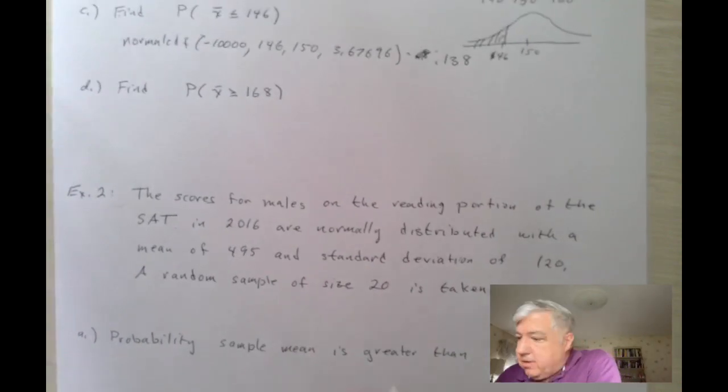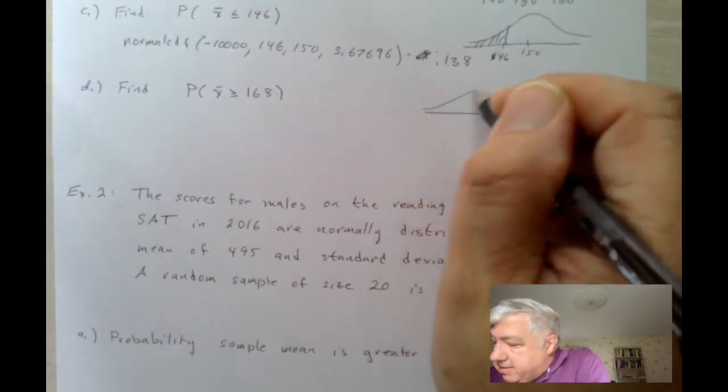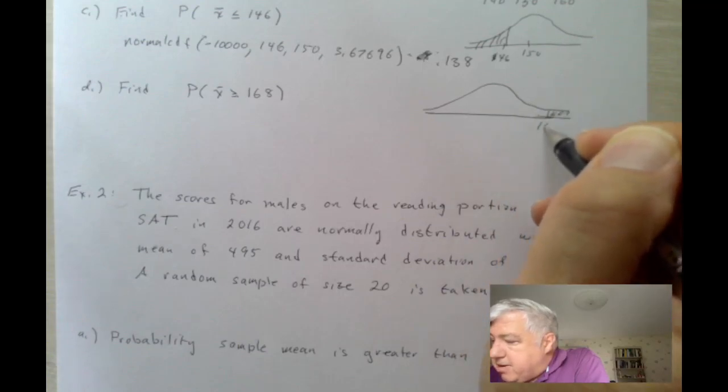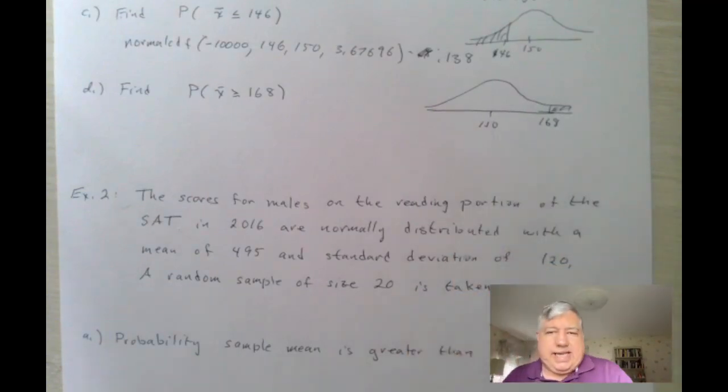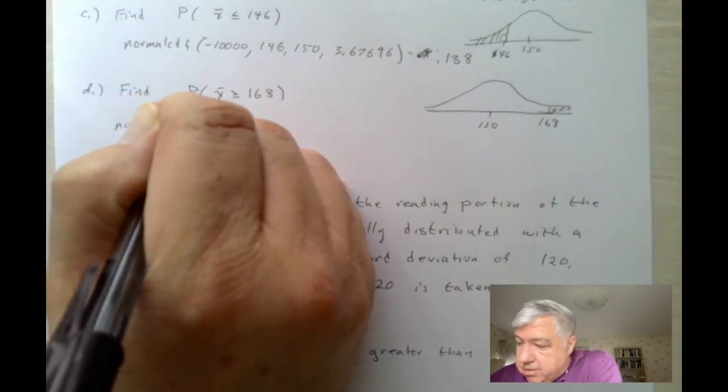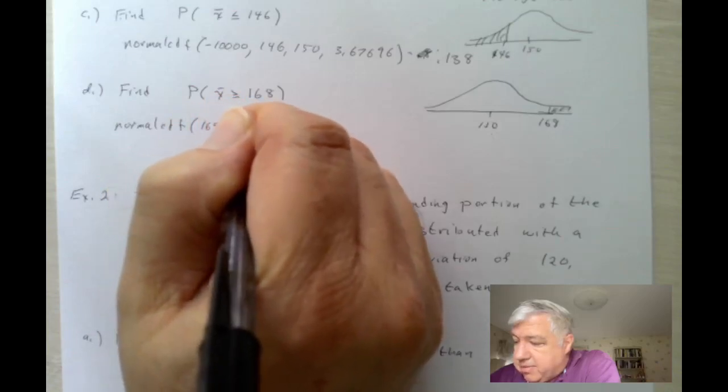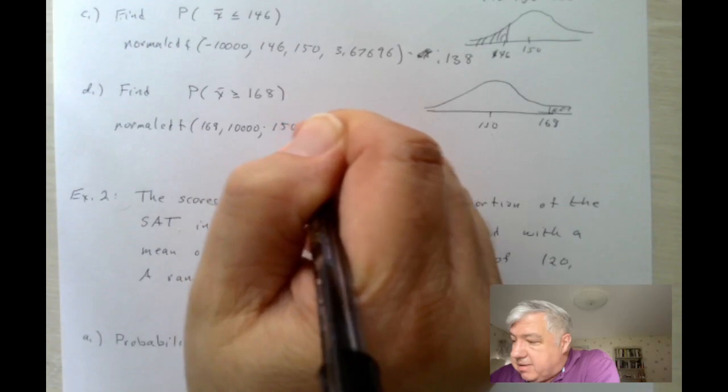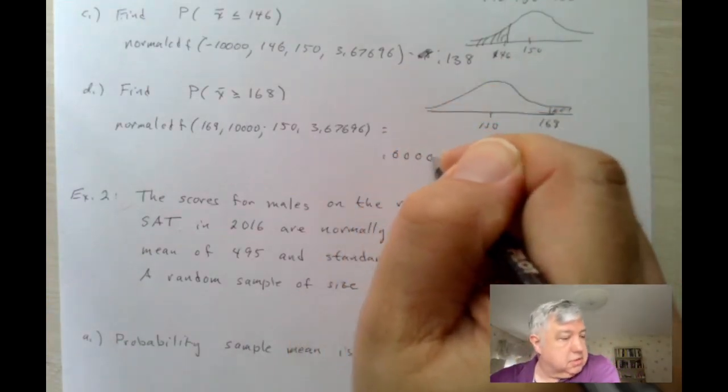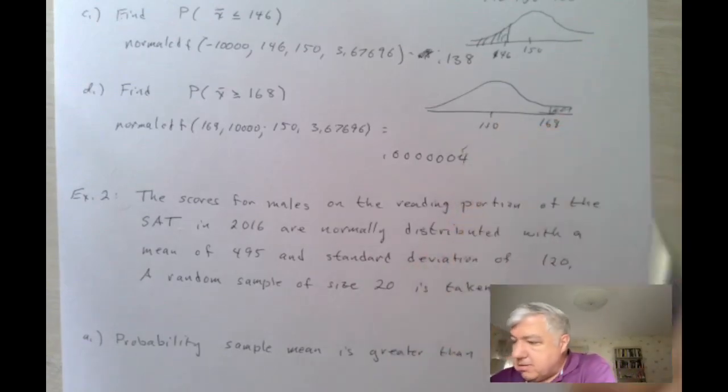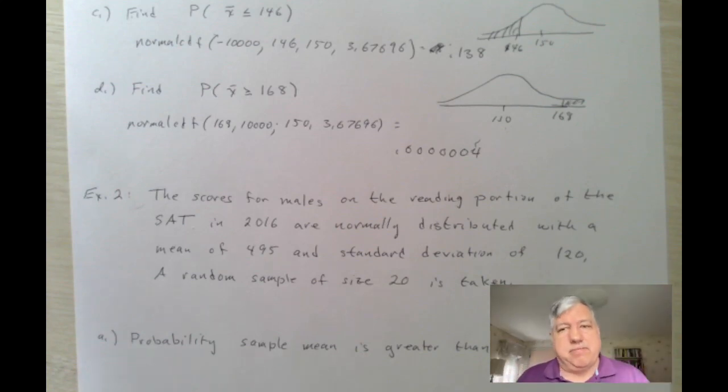Okay. And then finally probability that x bar is bigger than 168. Well you can be sure that it would be, this is going to be very small because it's so far away from the mean. The gap between here is 18, and we're talking more than 18, so it's more than five, five standard deviations away from the mean. And sure enough if you do, if you compute this on your calculator, this would be 168, 10,000, 150, 3.67696, this turns out to be 0.0004 I think. Okay basically zero. There's a, technically it's a non-zero number but it's very very small.